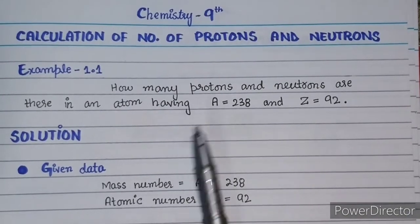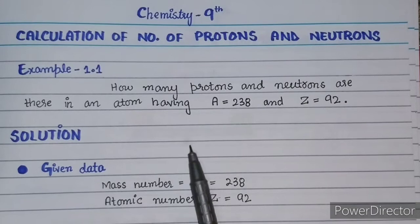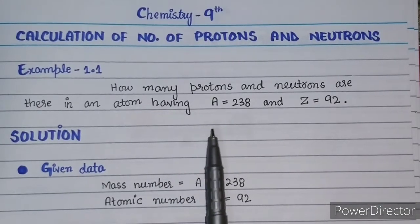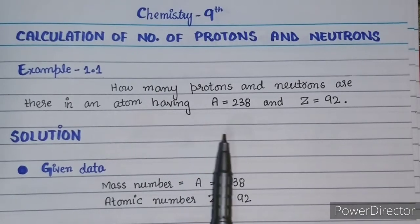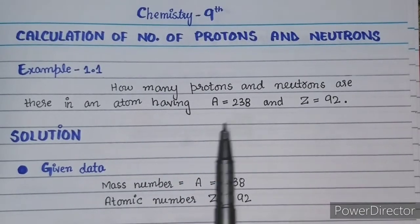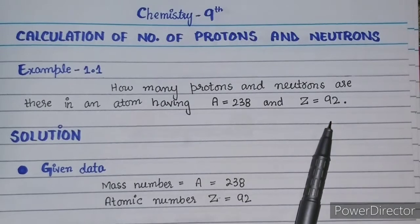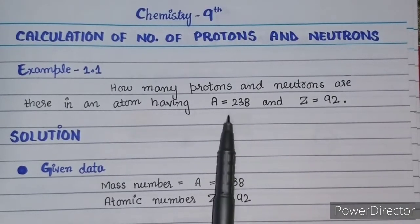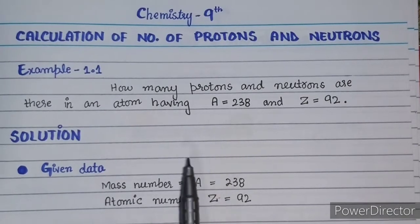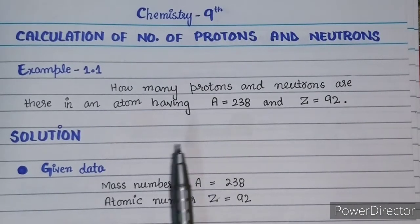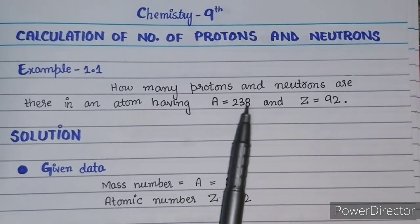First of all, let's look at the statement of this example: How many protons and neutrons are there in an atom having atomic mass 238 and atomic number 92? Now let's solve this example.